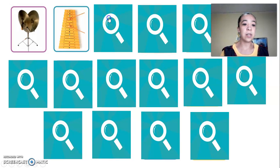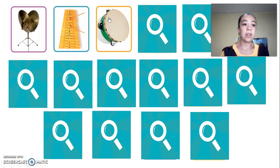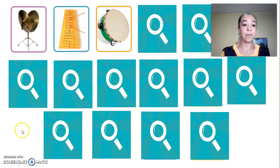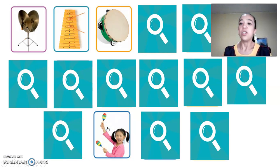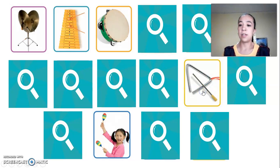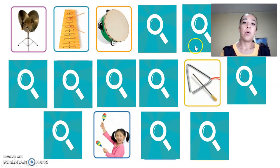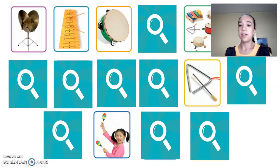What is this? Very good. This is a tambourine. Excellent. What is this? Excellent. What is this? Triangle. Very good. What are these? Instruments.